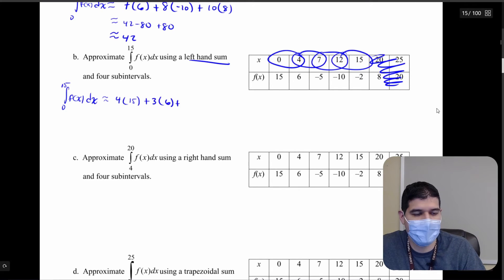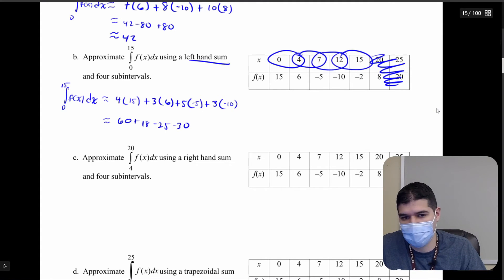Plus the base so from 7 to 12 that's going to be 5 times the height we're grabbing it from the left hand so that's going to be f of 7 which is negative 5. And then our last interval from 12 to 15 that's a base of 3 and the height we're going to grab it from the left part of that interval that's going to be negative 10, f of 12 is negative 10. We're going to make these calculations so that's going to be 60 plus 18 minus 25 minus 30 which comes out to be about 23.